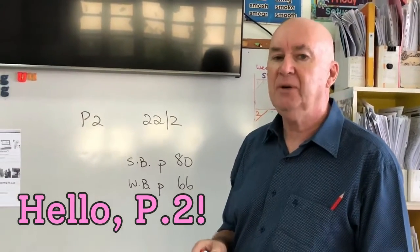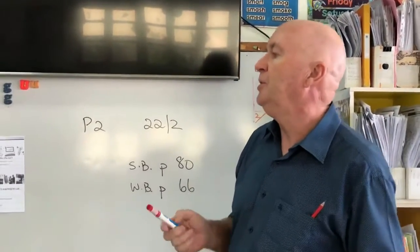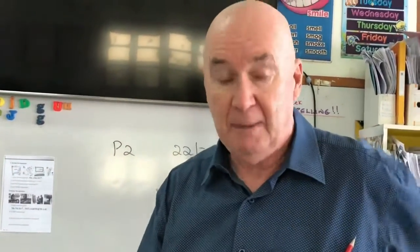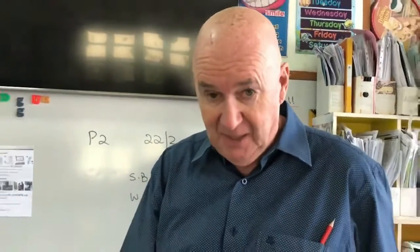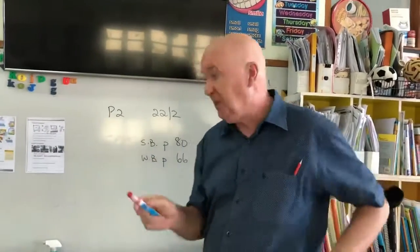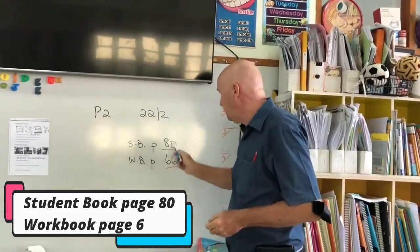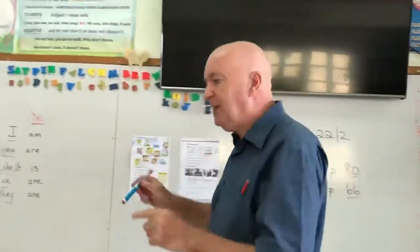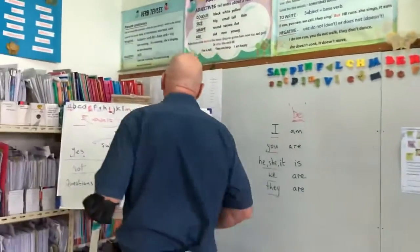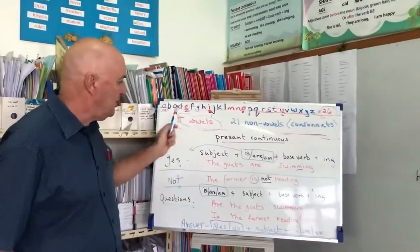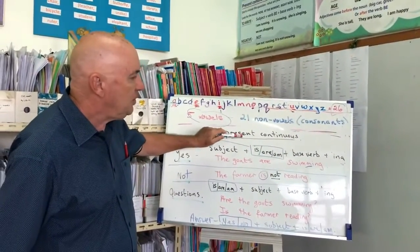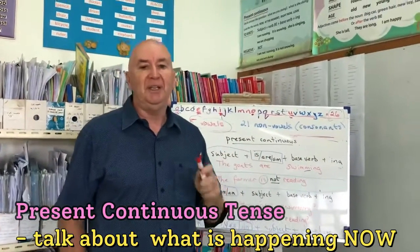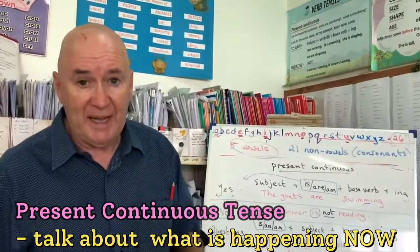P2, let's carry on a little bit more with what we were doing about how to talk about what is happening now, what is happening at this minute, what is happening as we speak. So we're going to look at these two pages: your student book 80 and your workbook 66. First, let's remind you of what we did on Monday. What we're doing is called Present Continuous — that means we're learning how to talk about what is happening now.